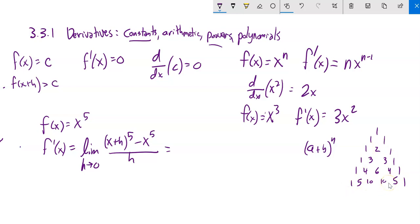a plus b squared is a squared plus 2ab plus b squared. Notice it's 1a squared, 2ab, 1b squared. a plus b cubed, the coefficients are in the next row. So it would be 1a cubed plus 3a squared b plus 3ab squared plus 1b cubed.